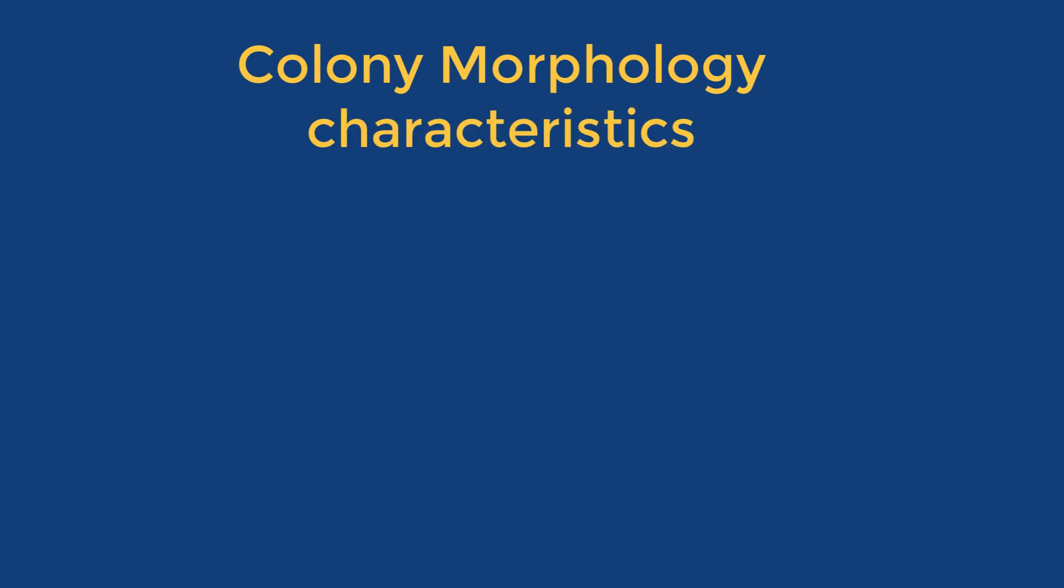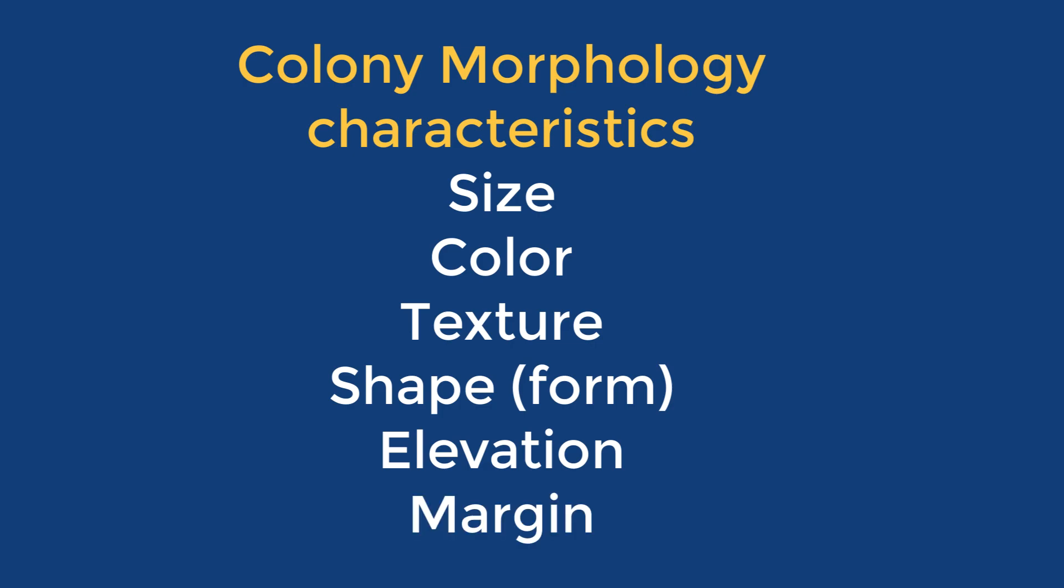The six characteristics that are used to describe colony morphology are size, color, texture, shape, elevation, and margin. Let us look at each of these.